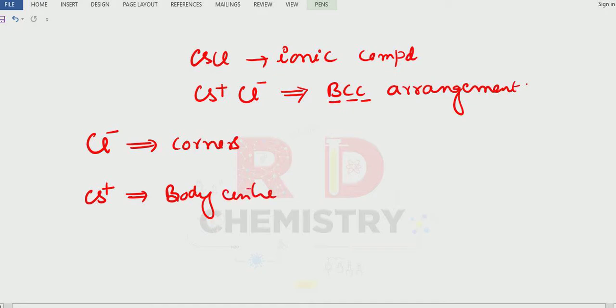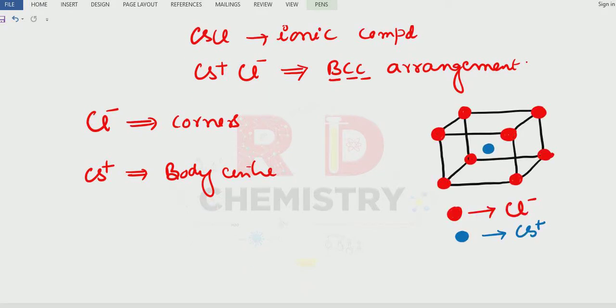Let us see the unit cell of the cesium chloride now. Now you can see chlorides are there only in the corners and cesium is there in the center of this cube.